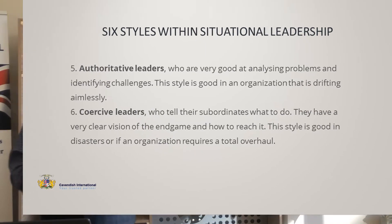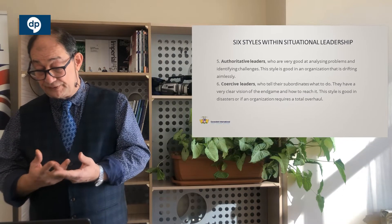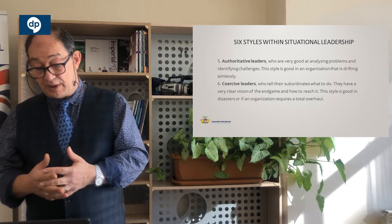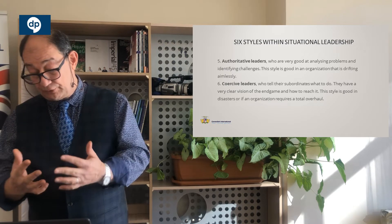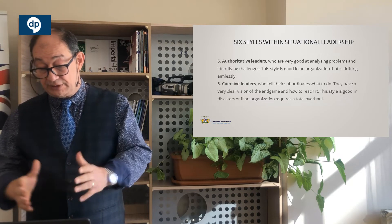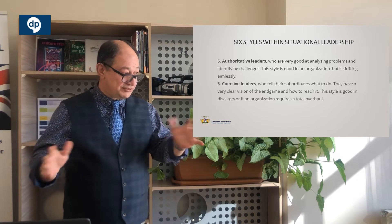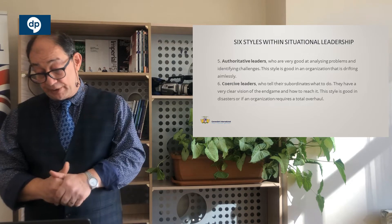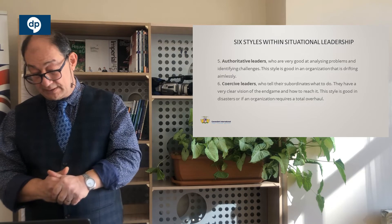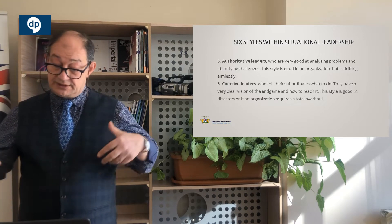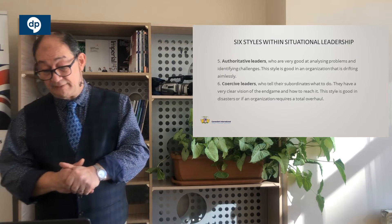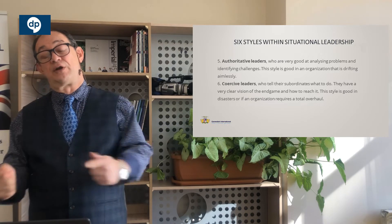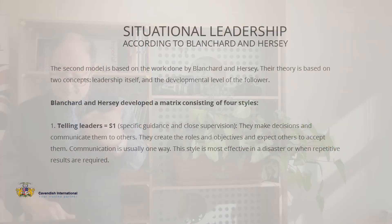The next two: the authoritative leader is good at analyzing problems, identifying challenges, and going for a head-on solution, getting the team back together. This is good for teams that have been drifting because the project has been going on too long — it gets them back into shape. Then there are the coercive leaders. These leaders tell subordinates what to do, they have a very clear vision of the end goal and how to reach it, and they get everybody to follow them. It works in a number of situations.